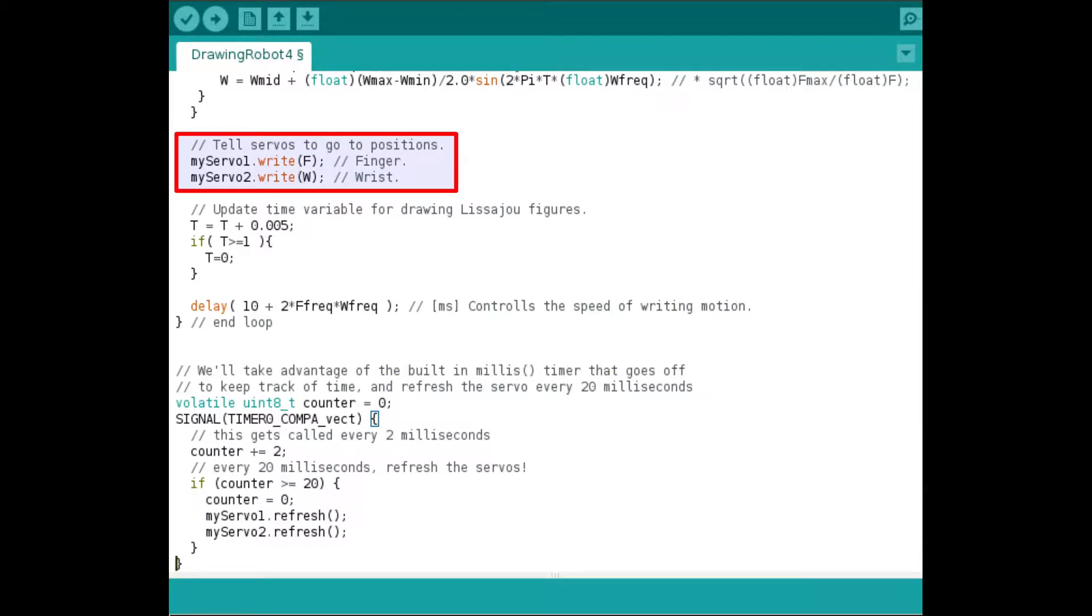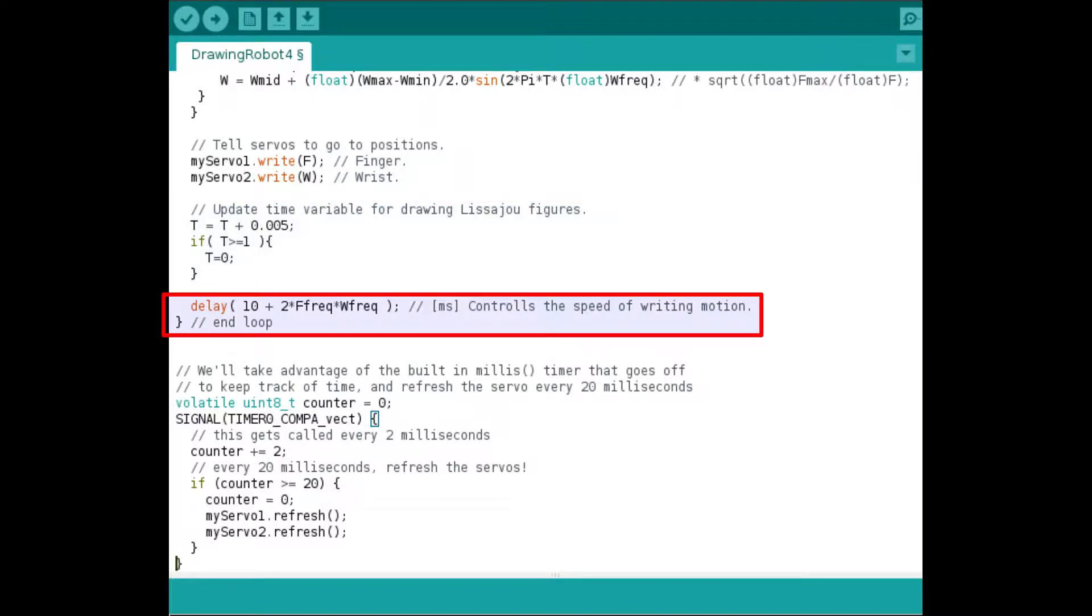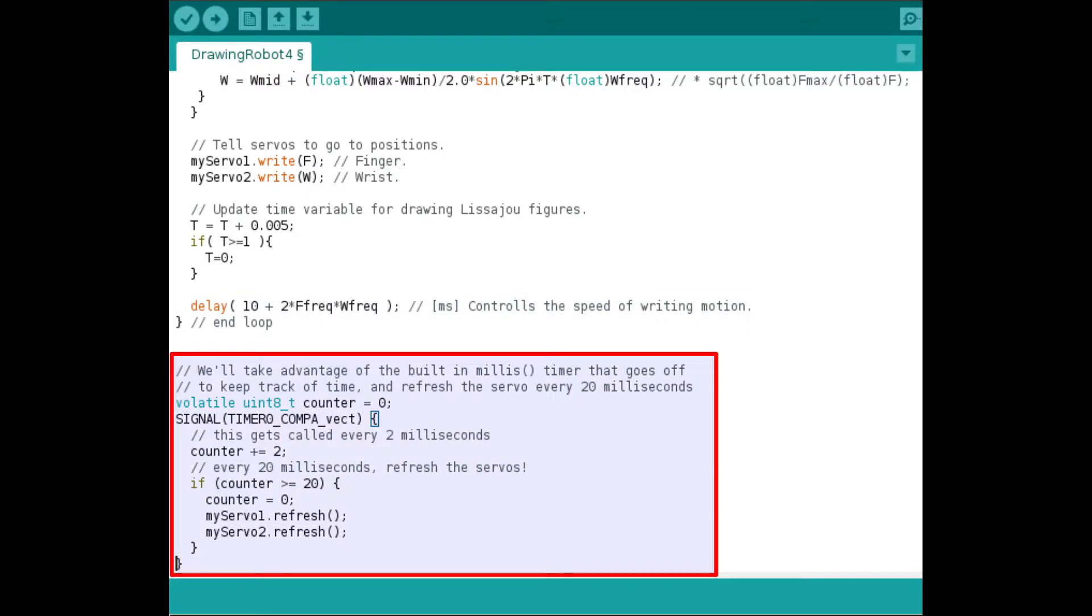We're actually telling the servos where to go. And then we're updating the time variable for the automatic Lissajous figure drawing. And then instituting a little delay here. And then there's a function at the bottom that controls the pot.